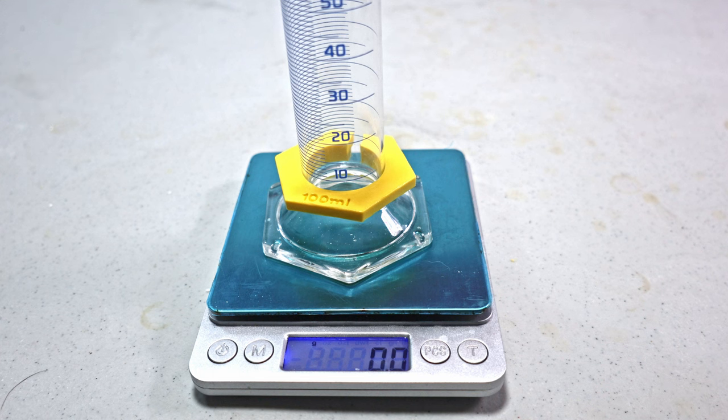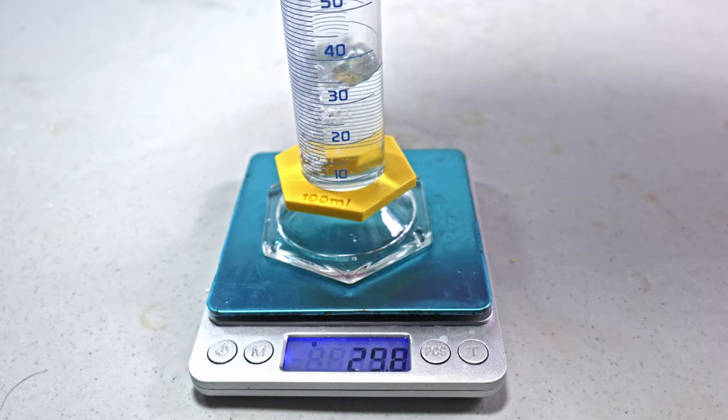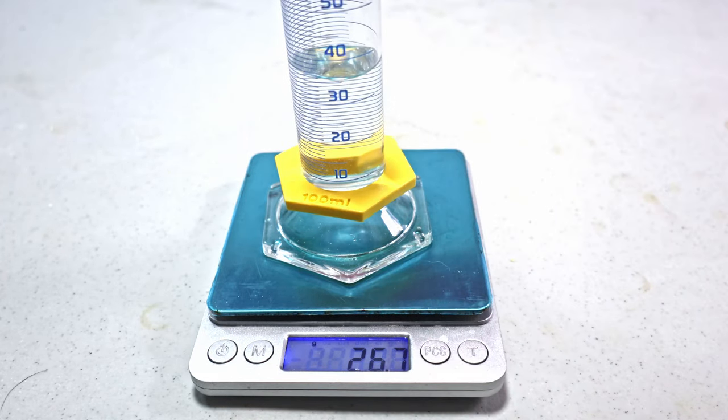To make sure we have pure diisopropyl ether and not an ethereal alcohol mixture, we need to get the density. So let's just pour this out. We have 26.7 grams.